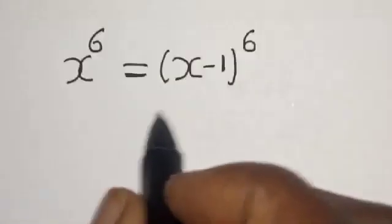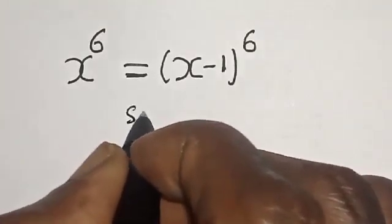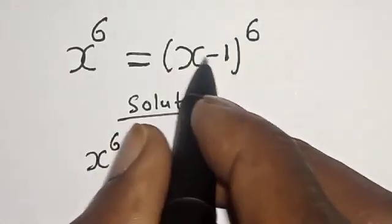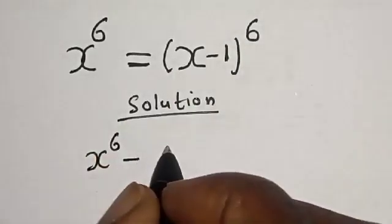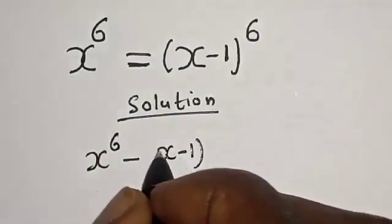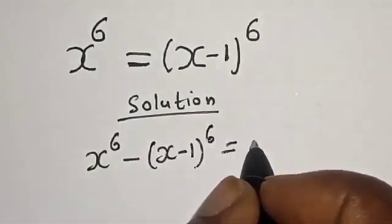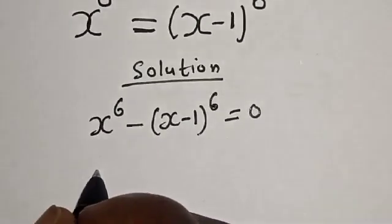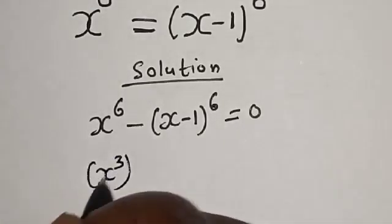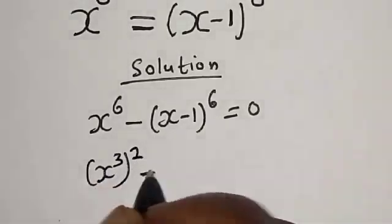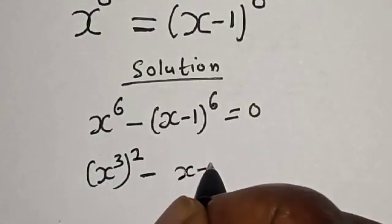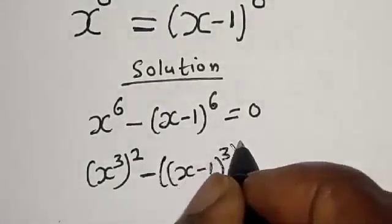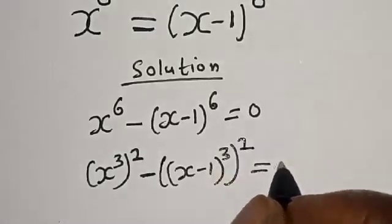Before we proceed, please don't forget to like, share, comment and subscribe. For the solution: x raised to power 6 minus x minus 1 raised to power 6 is equal to 0. Then x raised to power 6 can be written as x raised to power 3 squared, minus x minus 1 raised to power 3 squared, is equal to 0.